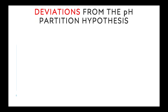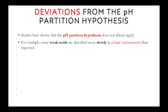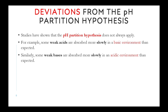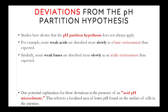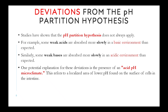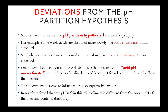Now we can see deviations from the pH partition hypothesis. Studies have shown that the pH partition hypothesis does not always apply. For example, some weak acids are absorbed more slowly in a basic environment than expected. Similarly, some weak bases are absorbed more slowly in an acidic environment than expected. One potential explanation for these deviations is the presence of an acid pH microclimate — a localized area of lower pH found on the surface of cells in the intestine. This microclimate seems to influence drug absorption behavior. Researchers found that the pH within this microclimate is different from the overall pH of the intestinal contents, or bulk pH.